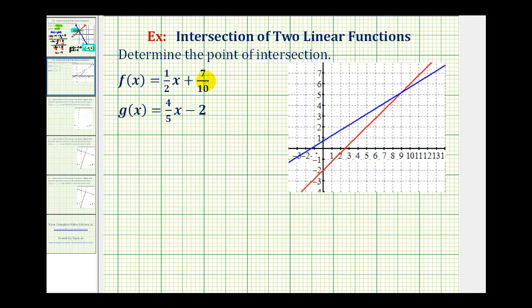Welcome back to a second example of determining the point of intersection of two linear functions. In the first example, we solved it graphically and algebraically, but looking at these two linear functions, because this y-intercept is a fraction, it would be much more difficult to graph this accurately, so we'll go ahead and solve this algebraically and then verify it graphically since I've graphed it using some graphing software.